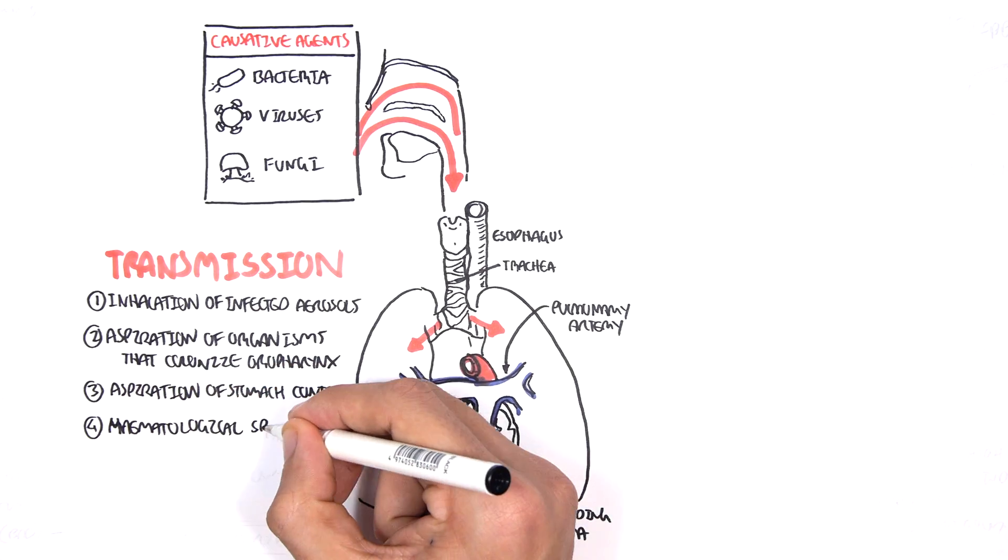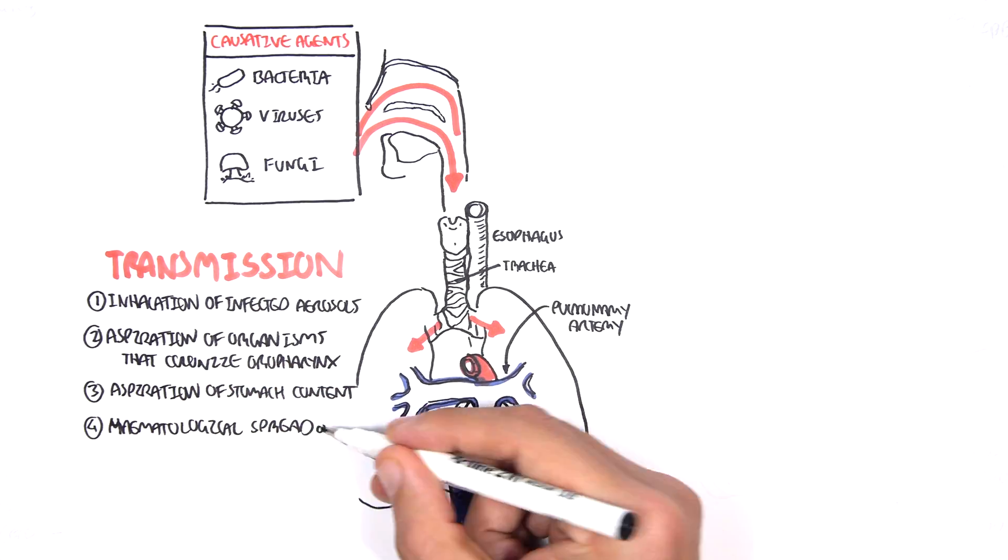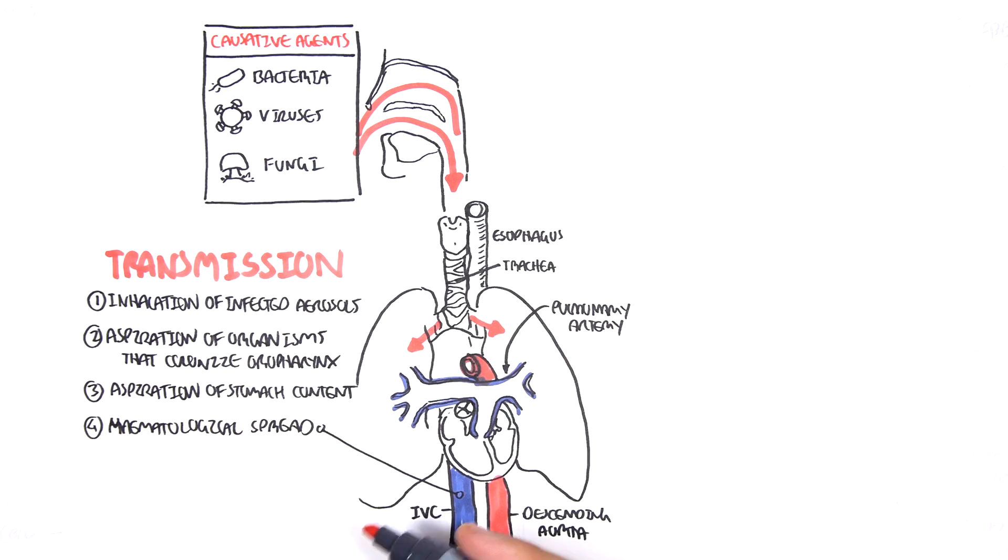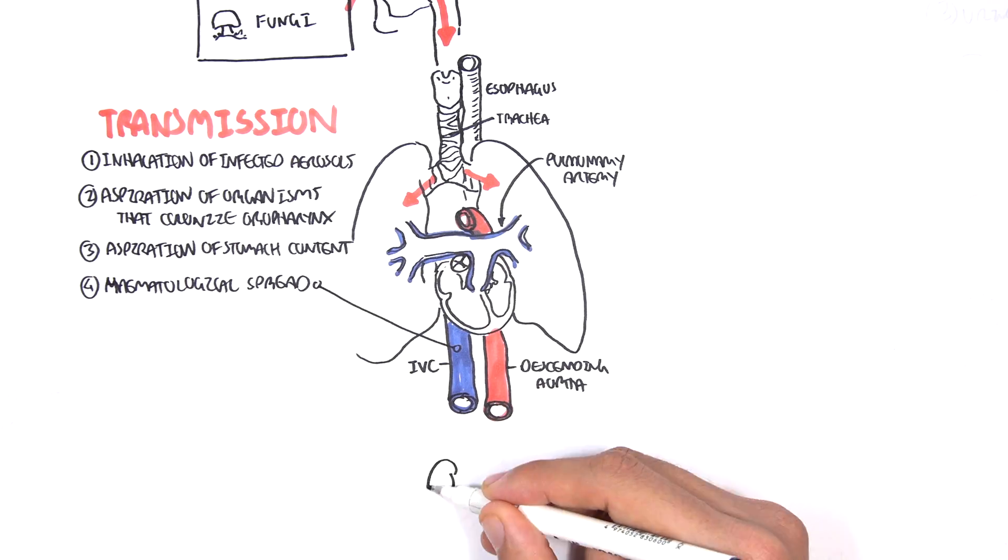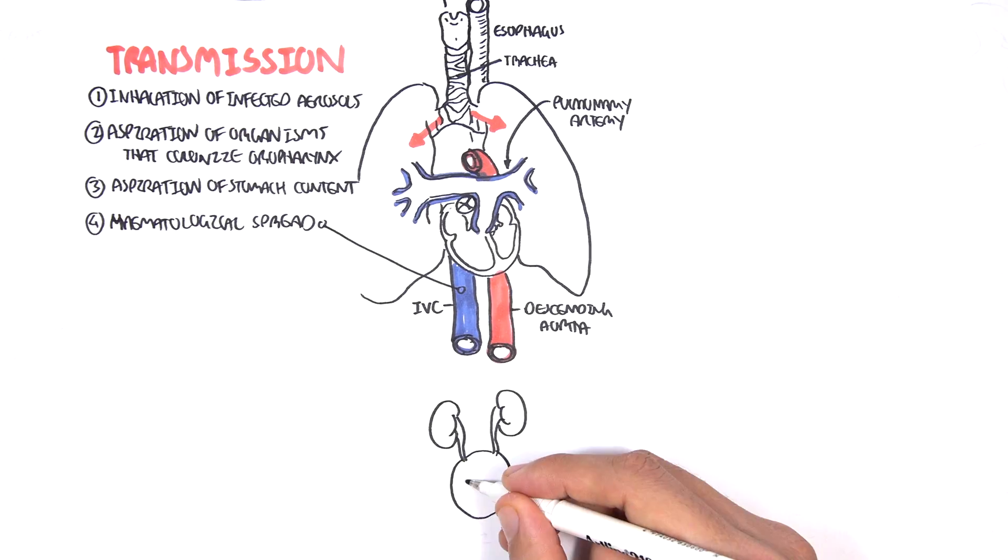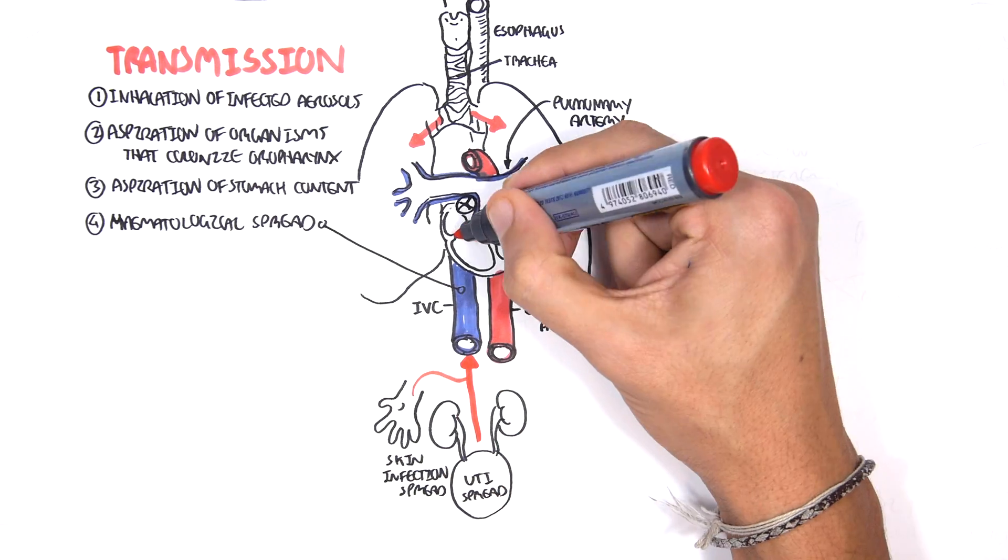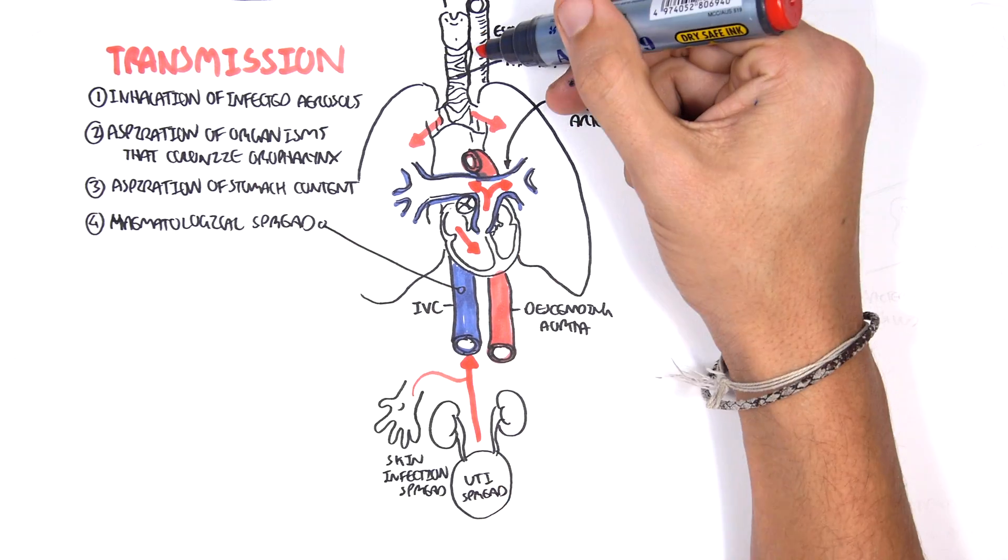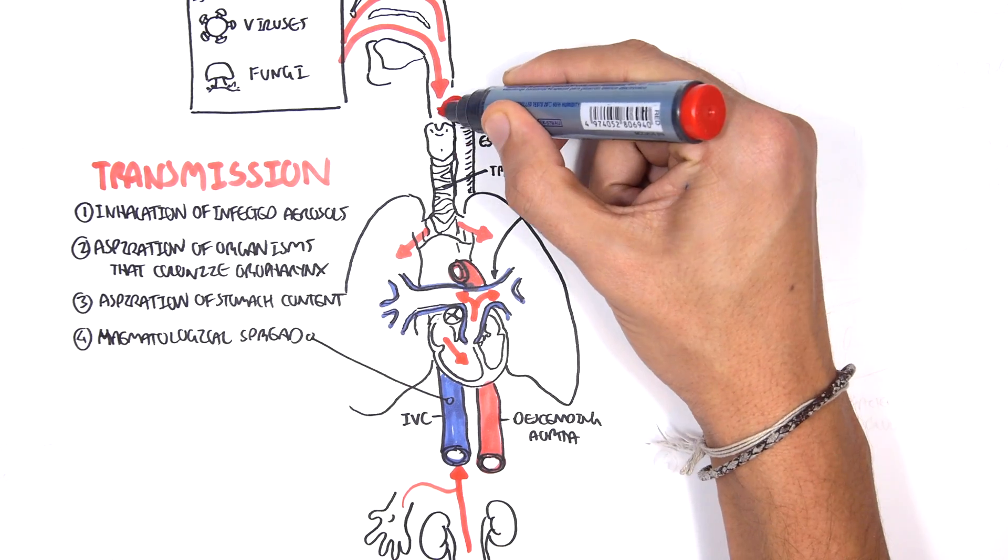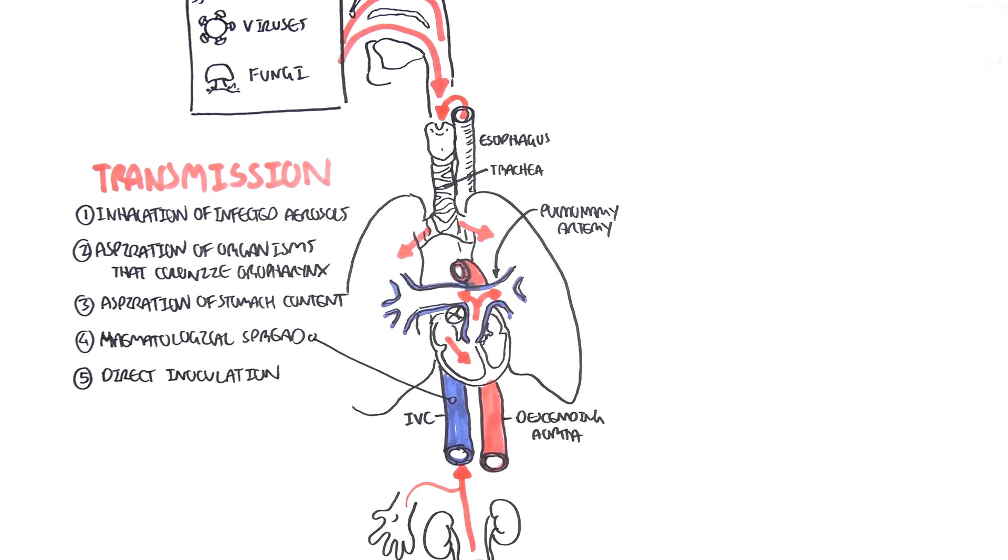There can also be hematological spread from the inferior vena cava or superior vena cava, for example, such as spread from a hand infection or kidney infection. So basically pneumonia is a secondary infection. There can also be direct inoculation as a way of transmission.